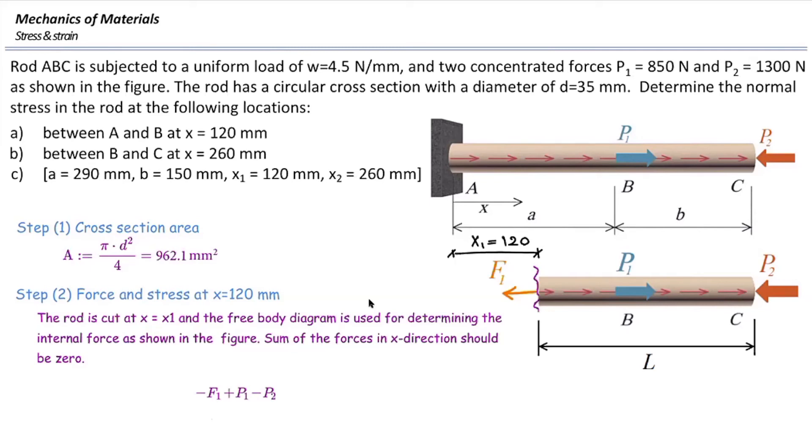Remember that tug of war example? This distributed load is acting on the entire length of that part. I am going to write it as W multiplied by L, and L stands for the length of that free part. And sum of these forces should be equal to zero.